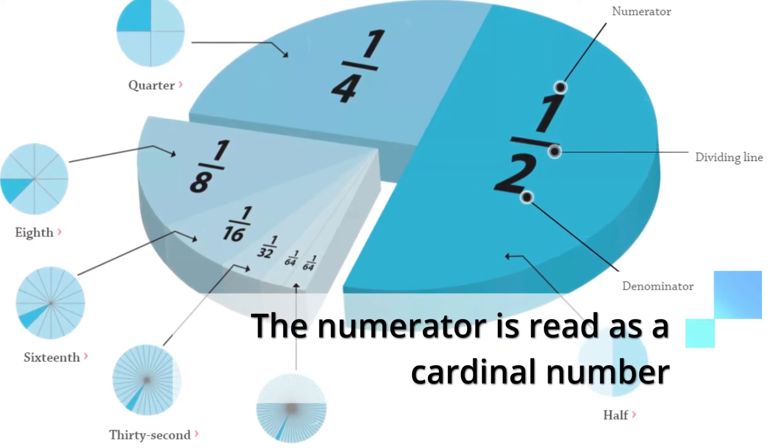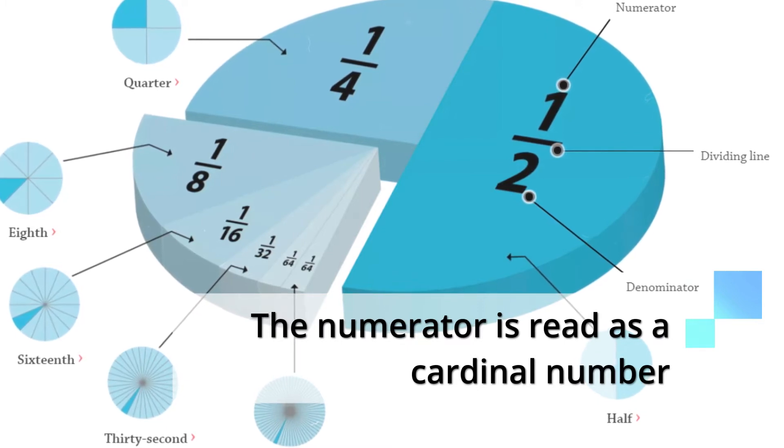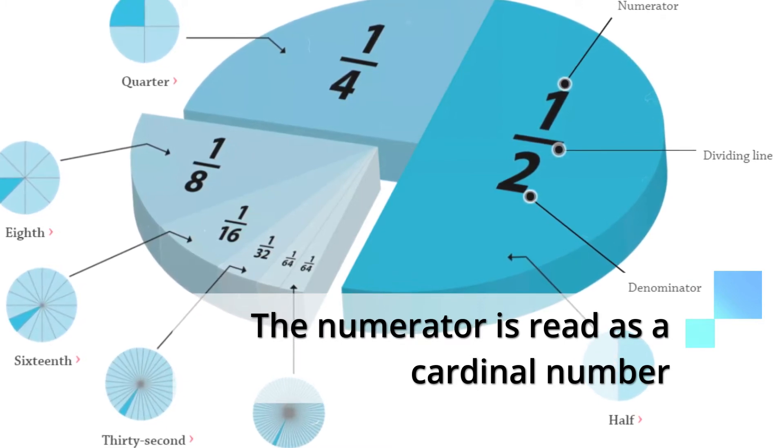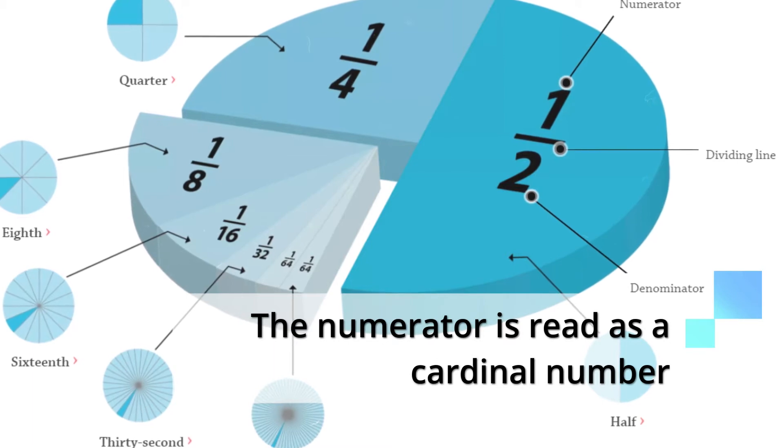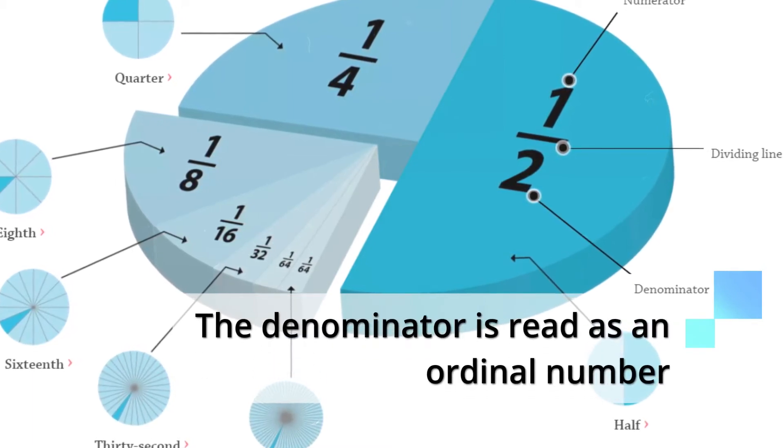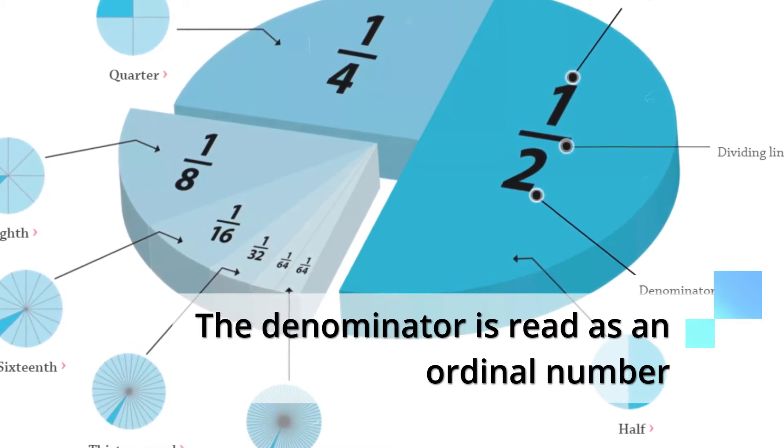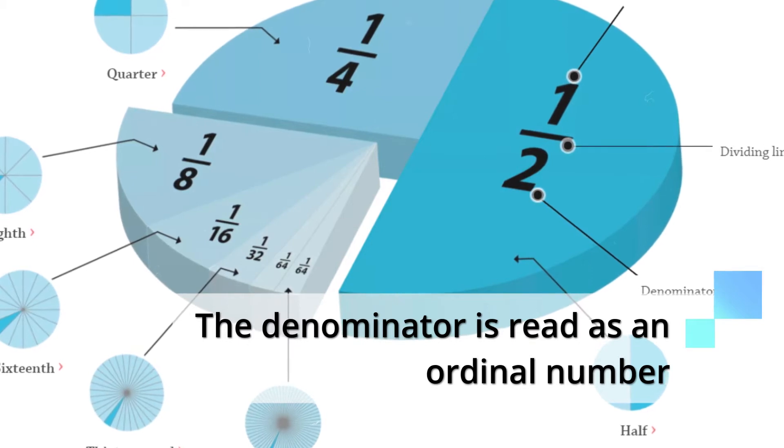The numerator is read as a cardinal number: 1, 2, 3, 4, and so on. Meanwhile, the denominator is read as an ordinal number. For example, 3rd, 4th, 5th, 6th, and so on.